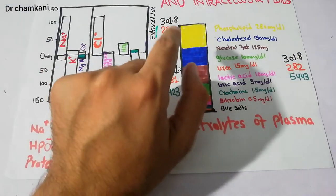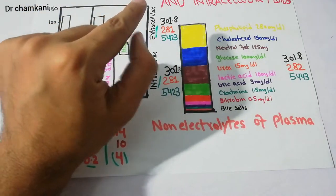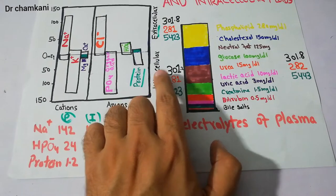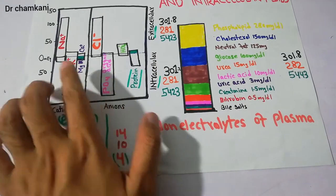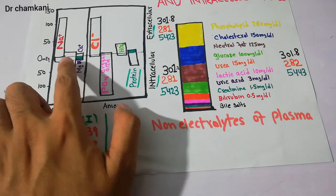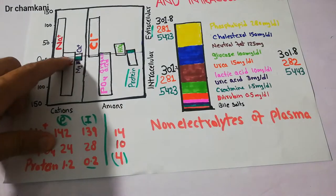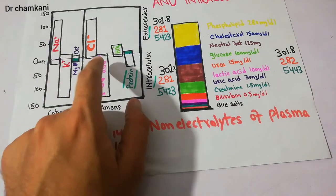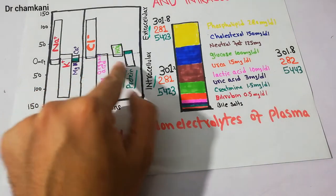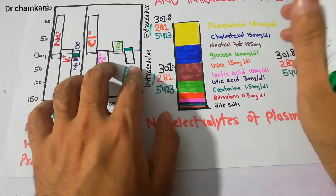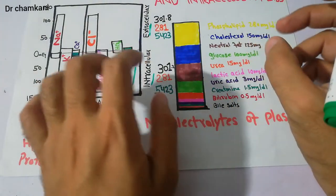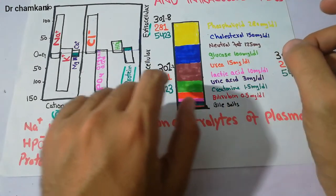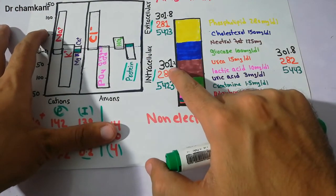If we calculate the osmolarity of all the osmotically active particles of the intracellular compartment, we will see that the important cation is basically potassium, which plays a very big role. Magnesium is also present but in a very small amount. Phosphate is also present in a significant amount inside the cell, and together they contribute to osmolarity. Their combined osmolarity is 301.2 milliosmoles per litre.